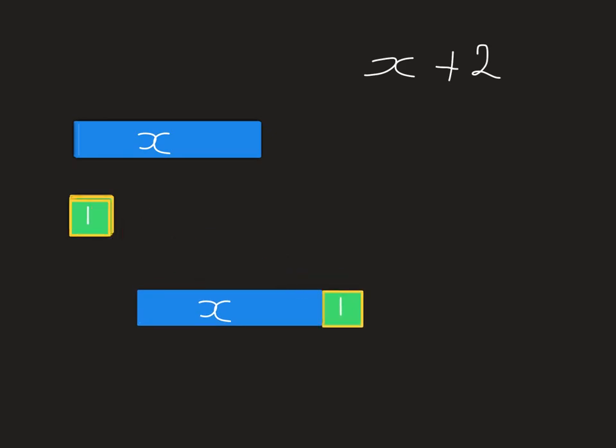Okay, let's say I have x plus 2. How would I show that with my algebra tiles? Well, this represents x, this is 1, and this is 2. So x plus 2 would look like that.